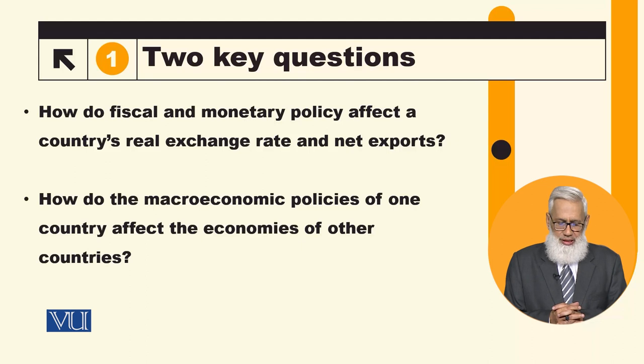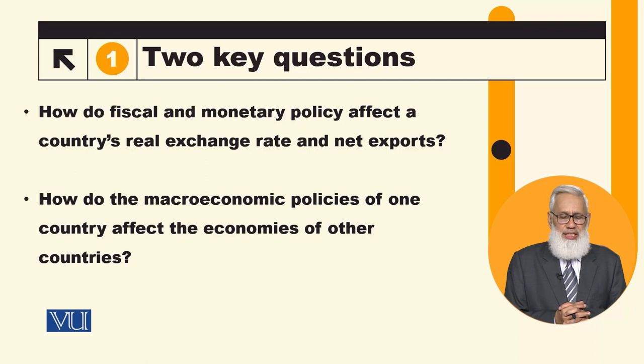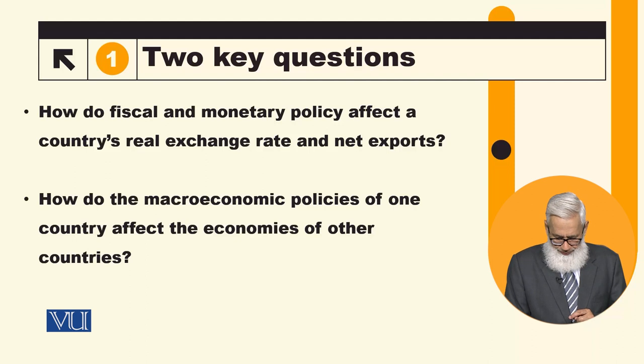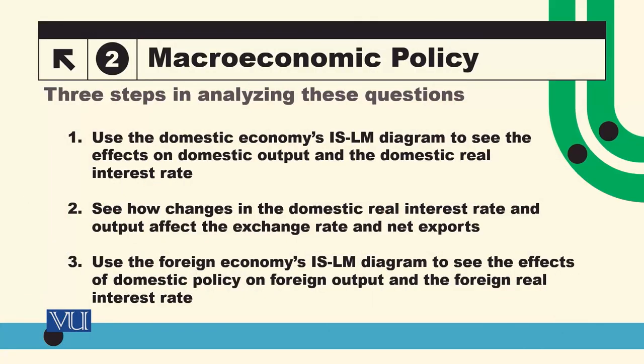To answer these questions, there are three steps involved. The first step is to use the domestic economy's IS-LM diagram to see the effect on domestic output and the domestic real interest rate — that is, to study the IS-LM framework as a result of the policy change.